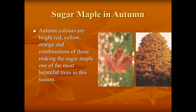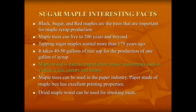Sugar maples are among the most beautiful of all trees because all these colors can appear at one time. Maple wood is used in manufacturing musical instruments such as violins, violas, guitars, and drums. Black, sugar, and red maples are the trees important for maple syrup production. Black maple has the most sugar, sugar maple the second most, and red maple has some.